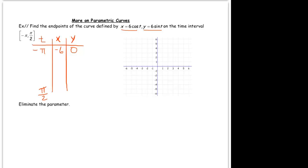When you plug in pi over 2 in for t in the x equation, you get 6 times cosine of pi over 2 which is 0. And when you plug it in for the y, you get 6 times the sine of pi over 2 which is 6 times 1 which is 6.